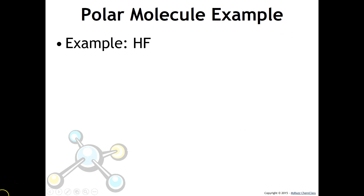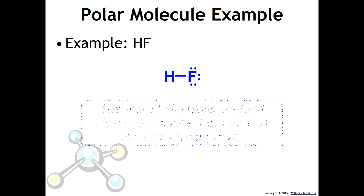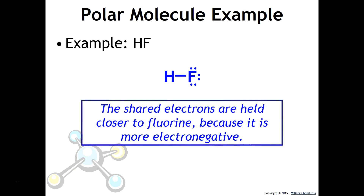In something like HF, or hydrofluoric acid, the Lewis structure shows that fluorine has a greater electronegativity than hydrogen, so it pulls the shared electrons closer to itself. Since electrons are negatively charged, fluorine ends up with a partial negative charge — indicated by the delta symbol — and hydrogen has a partial positive charge. This makes HF a polar molecule.